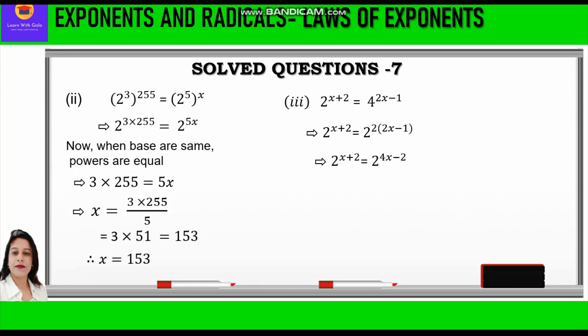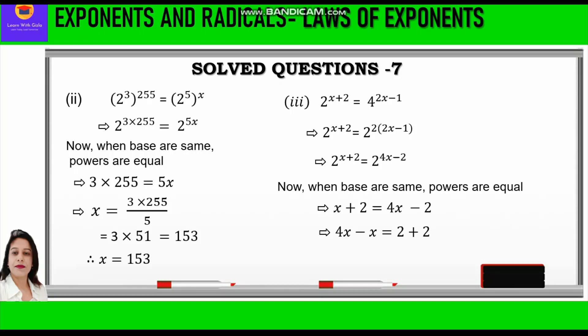Now when the bases are same the powers are equal, so we shall write x plus 2 is equal to 4x minus 2. Taking x terms on one side and constants on the other: 4x minus x is equal to 2 plus 2, which gives 3x is equal to 4. So x is equal to 4 by 3.